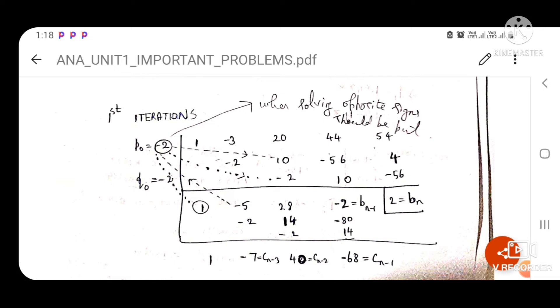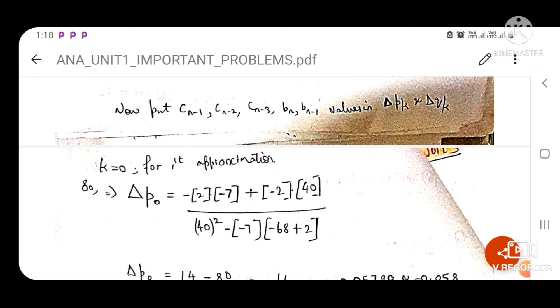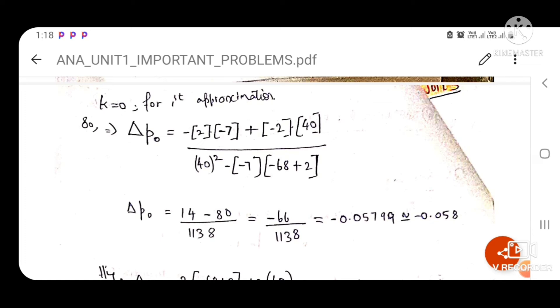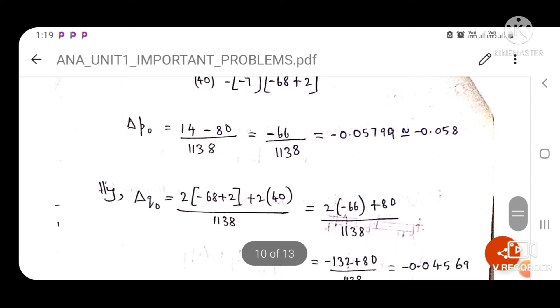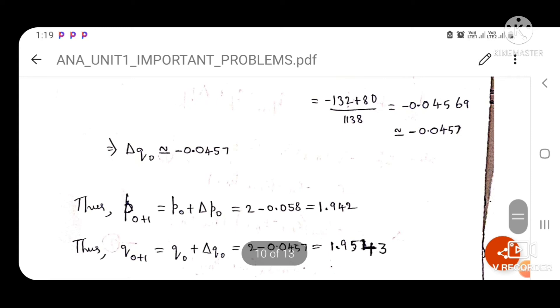Now put the cn minus 1, cn minus 2, cn minus 3, bn, bn minus 1 values in del pK. In the first case, you have to put k equals to 0 for first approximation. By doing that, you get this value which I have written here. You just solve it, then you get an approximate root which is 0.58. The same method carries on for del q naught, which also becomes an approximate root of minus 0.057.